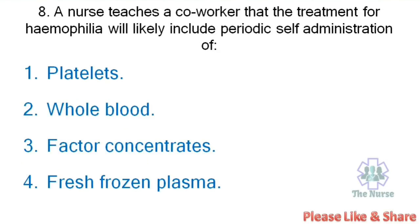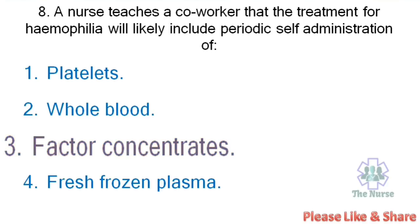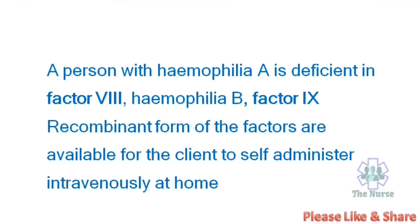Next question: A nurse teaches a co-worker that the treatment for haemophilia will likely include periodic self-administration of: platelets, whole blood, factor concentrate, or fresh frozen plasma. Correct answer: Factor concentrate. A person with haemophilia A is deficient in factor 8; haemophilia B is deficient in factor 9. Recombinant forms of the factors are available for the client to self-administer intravenously at home.